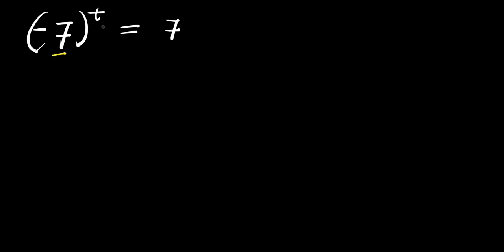Hello, how do you solve this complex exponential problem? We have negative 7 to the power of t equals 7. We are solving for all values of t that satisfy this equation, making use of two different methods.